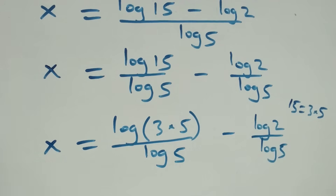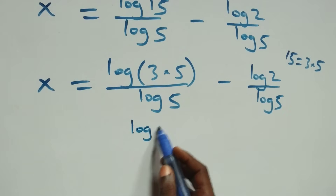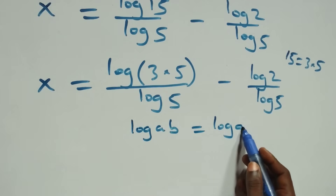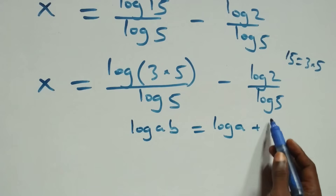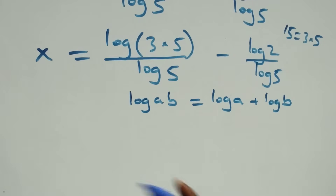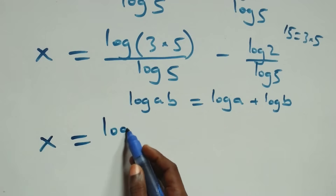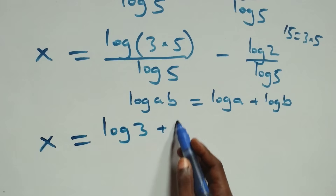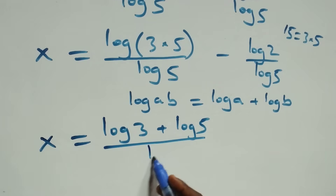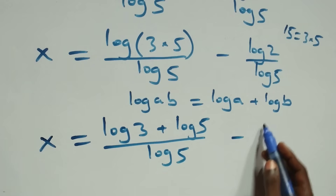This follows from the log rule: when we have log(a times b), this is the same thing as log a plus log b. So here we have x equals to log 3 plus log 5, over log 5, minus log 2 over log 5.